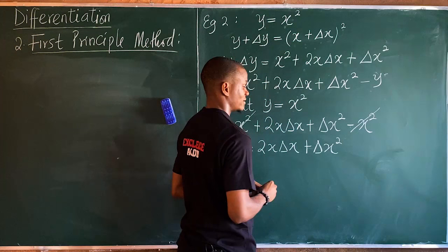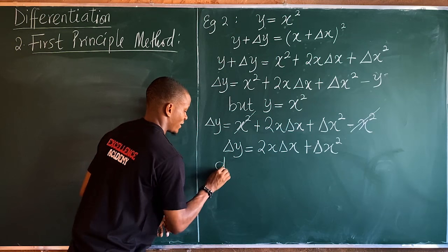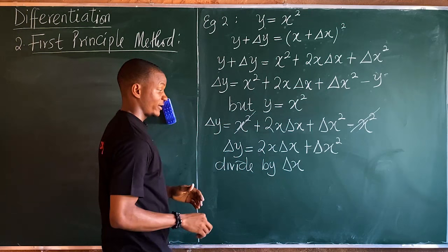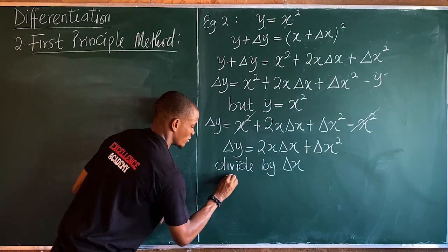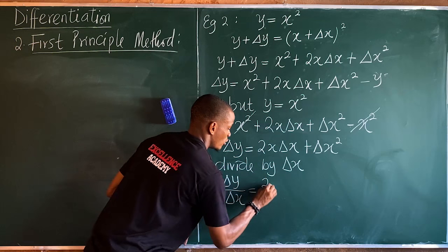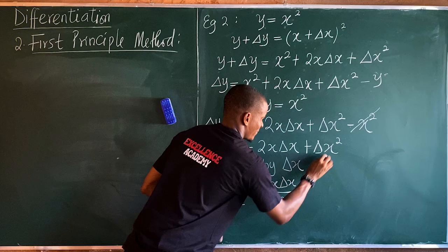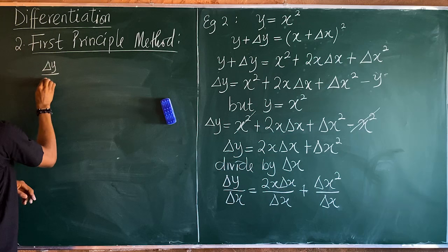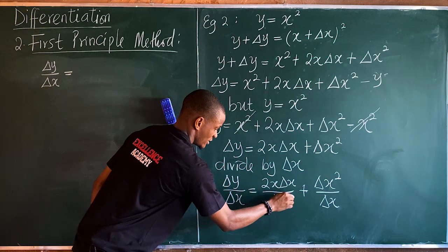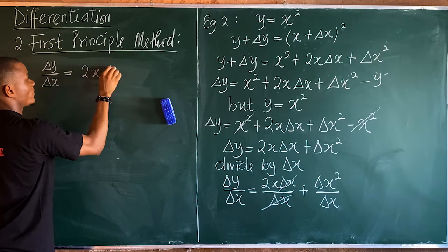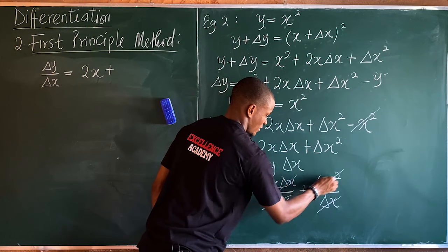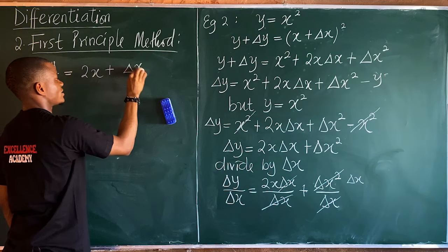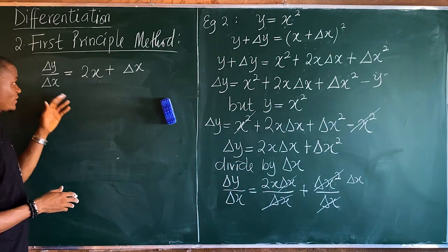We're left with Δy equals 2x·Δx plus Δx². Now dividing through by Δx: Δy/Δx equals 2x·Δx/Δx plus Δx²/Δx. This simplifies to Δy/Δx equals 2x plus Δx.